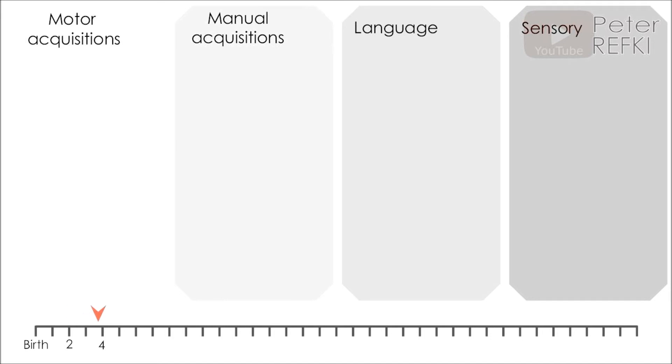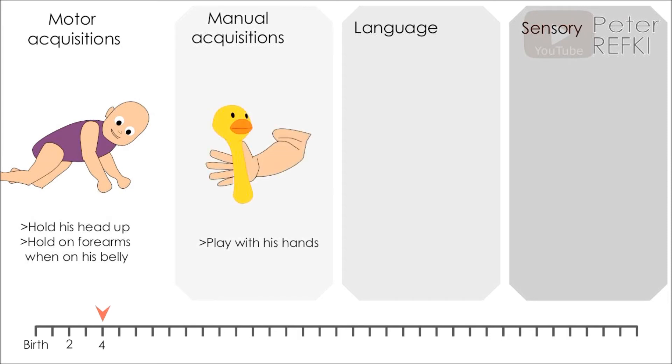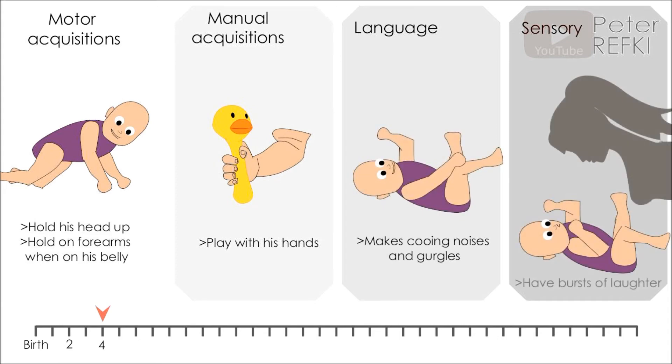At four months of age, the baby can hold his head up and support himself on his forearms when lying on his belly, play with his hands, make cooing noises and gurgles, and have bursts of laughter.